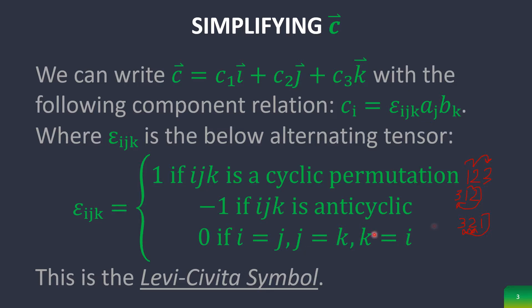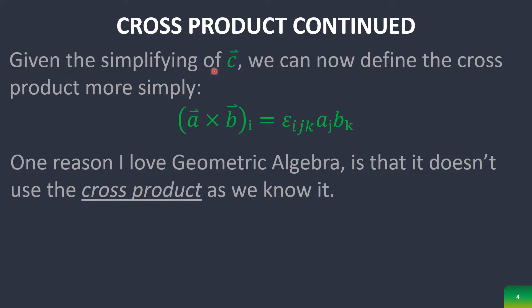And then basically, if it's not cyclic or anti-cyclic and it has a repeat in the numbers, such as i equals j or j equals k or k equals i, then it's zero. So basically, you just have to look at these terms. Anything else will be zero. And so using that definition, we can simplify any terms of the cross product right here. The i-th term of the cross product is equal to this Levi-Civita representation.